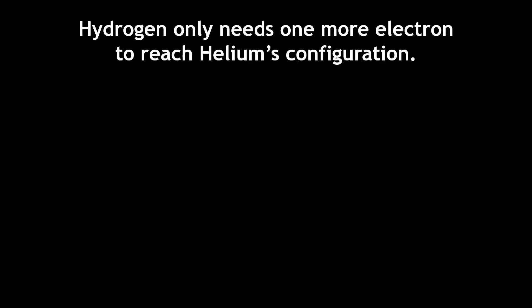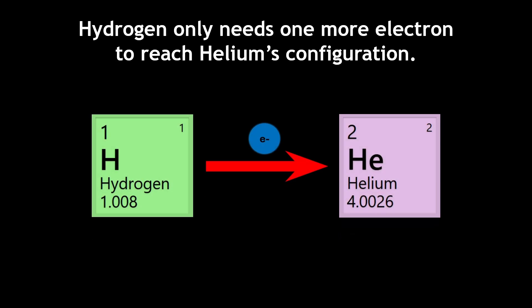As a result, hydrogen does not reach an octet, but rather a duet of electrons to match helium's configuration. Since hydrogen already has one valence electron, it only needs to form one bond to reach the two electrons.